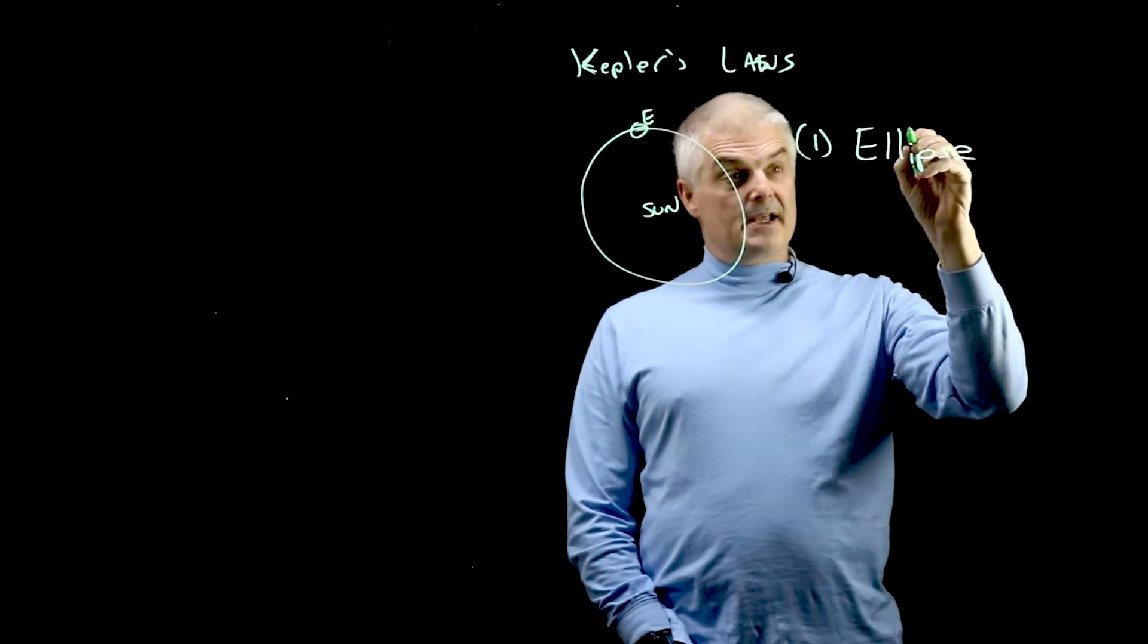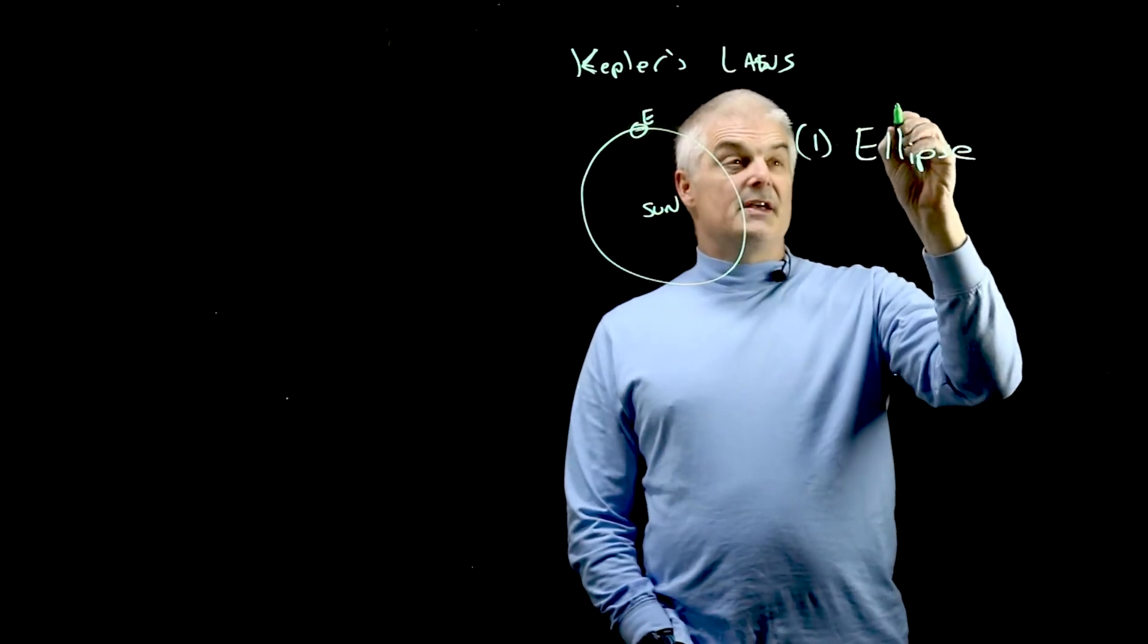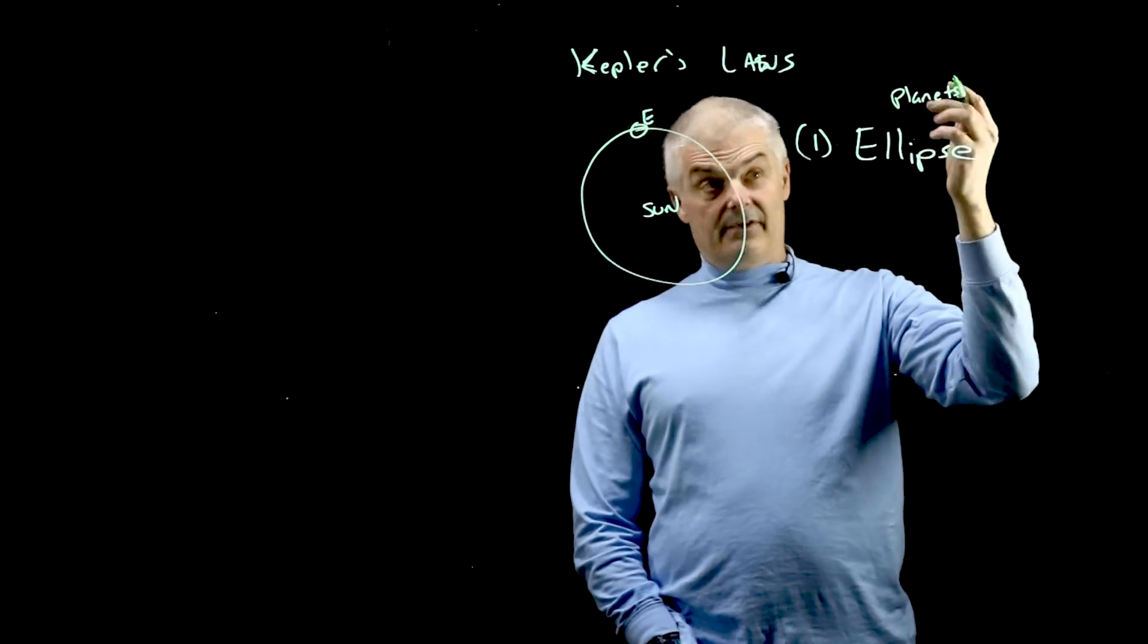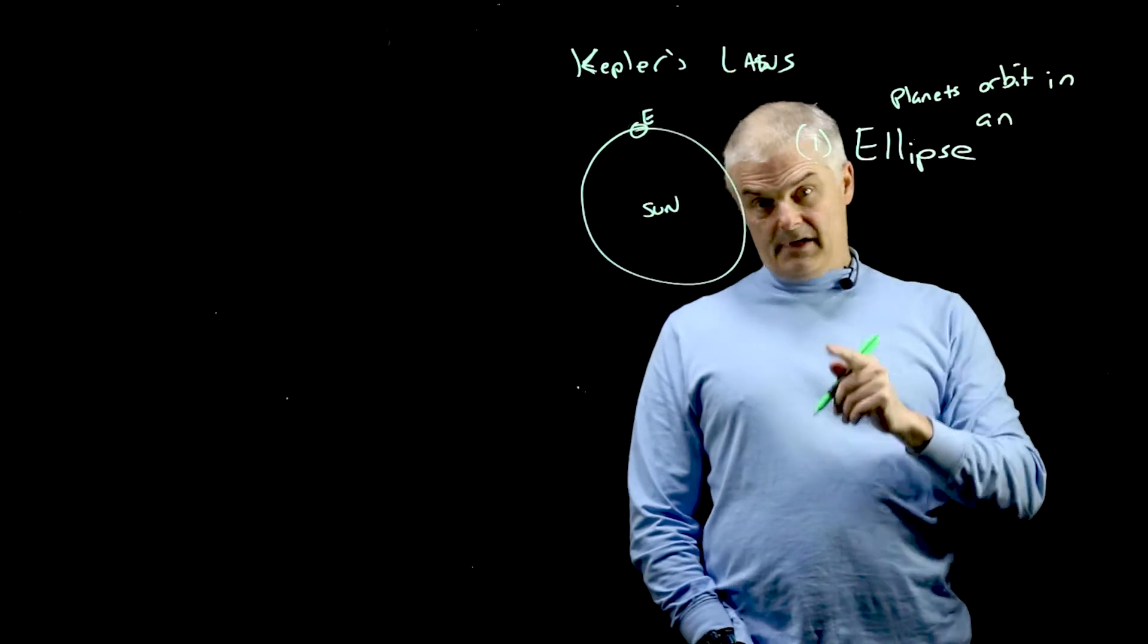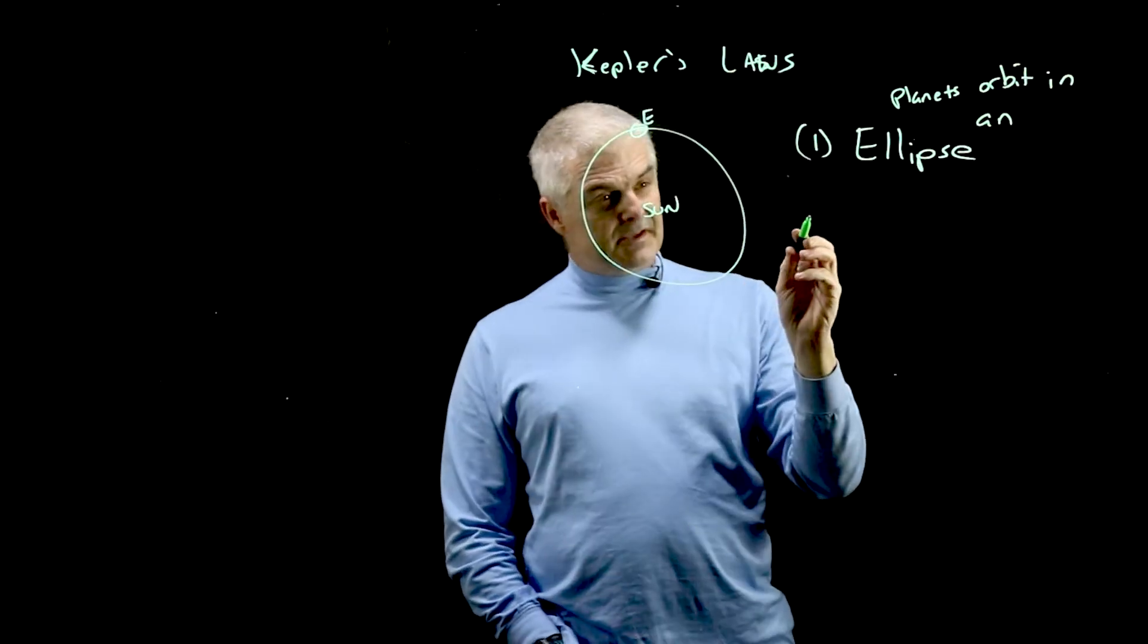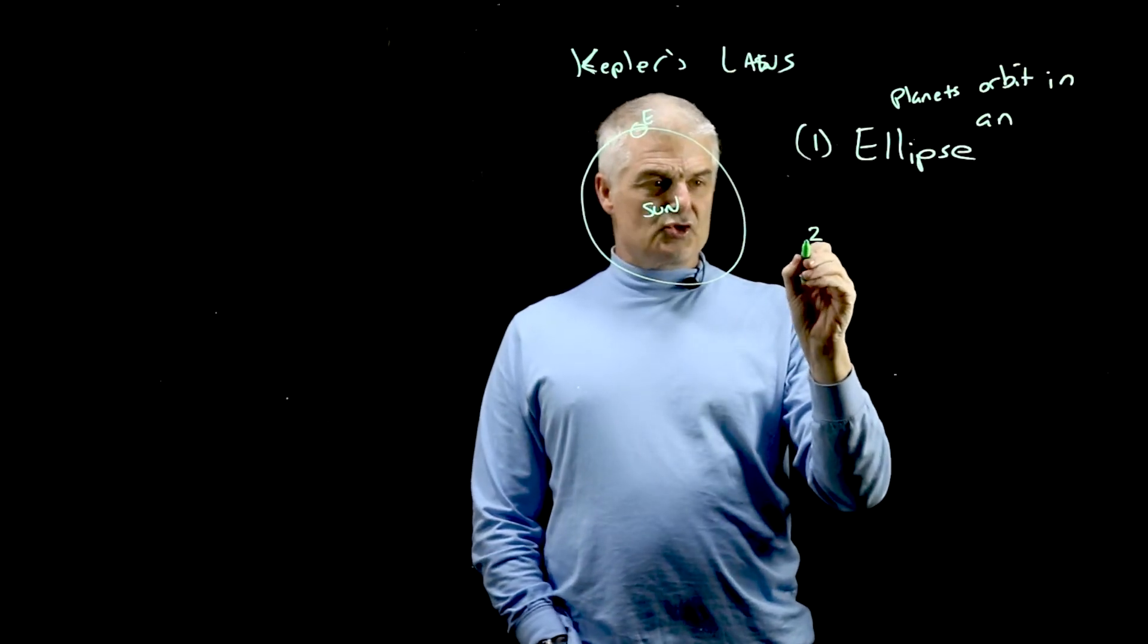So that's how I draw an ellipse. In Kepler's first law, planets, actually everything, orbits in an ellipse. All right, that's his first law. Now, the second one is, I think, the more intriguing.